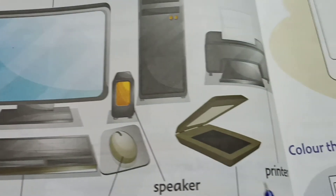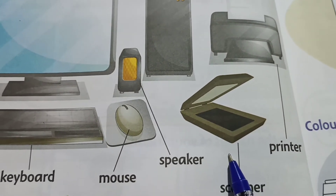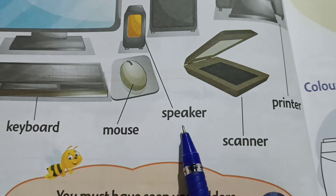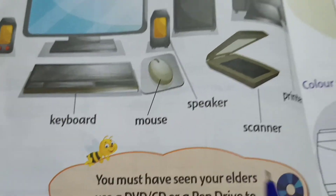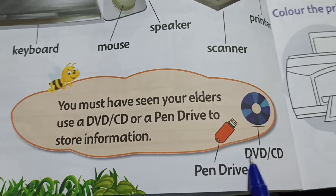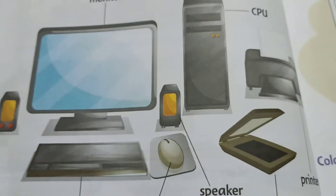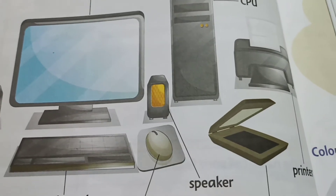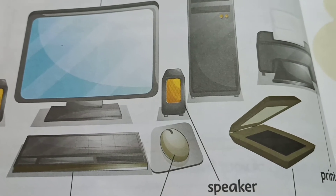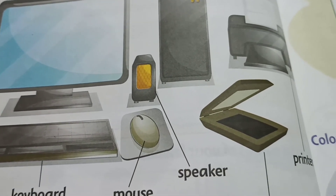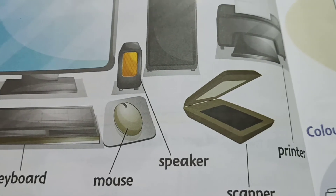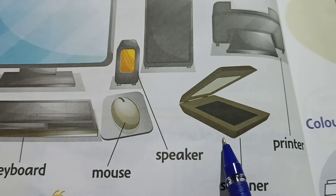Now children, you can see the scanner here — scanner, printer, speaker, pen drive, and CD or DVD. These are also some useful things in the computer. What does the scanner do? The scanner captures images and documents and converts them to digital format. This is the scanner.